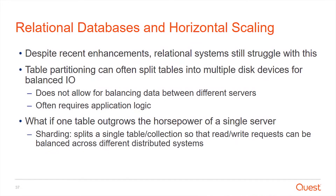Horizontal scaling is the third option. We could horizontally scale with relational systems — I'm not going to tell you that you can't do this with Oracle, MySQL, or SQL Server. But the fact of the matter is, it's really, really hard. There's a halfway point that most relational systems have around table partitioning, which allows us to take one table and split it amongst multiple disks. That's a good option for balancing I/O, but you still have that data living on a single server.